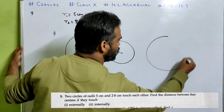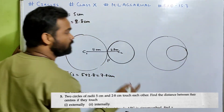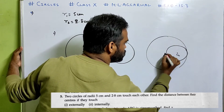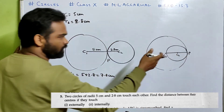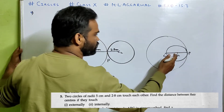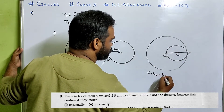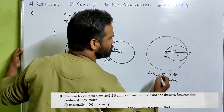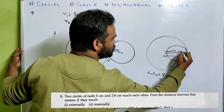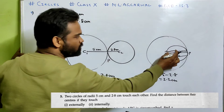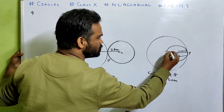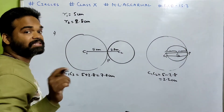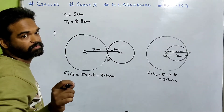When they touch internally, the same logic applies — the point of contact and the centers lie on the same straight line. The bigger radius is 5 and the smaller is 2.8, so C1C2 = 5 − 2.8 = 2.2 centimeters. We need to remember that the point of contact and the centers of the circles lie on the same straight line.